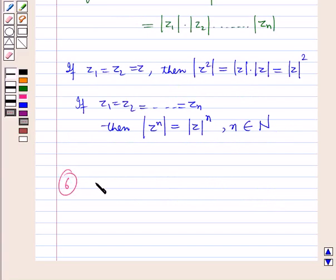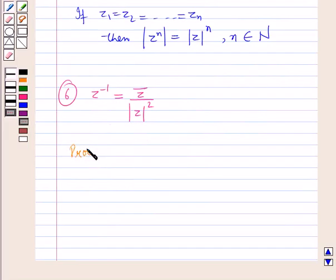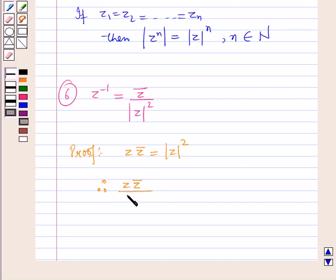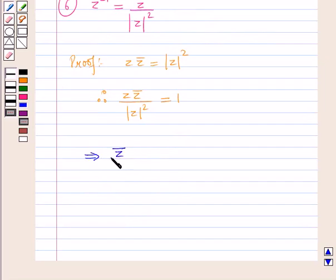Now let us discuss the next property: z inverse, that is z raised to power minus 1, is equal to conjugate of z over the square of modulus of z. We know that z into conjugate of z equals the square of the modulus of z, a property proved earlier. Therefore, conjugate of z over the square of modulus of z equals 1 over z, which equals z raised to power minus 1. Hence the given property is proved.